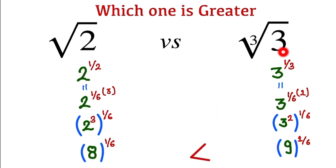So according to this, cube root 3 is greater than square root 2. So this one is our final answer.